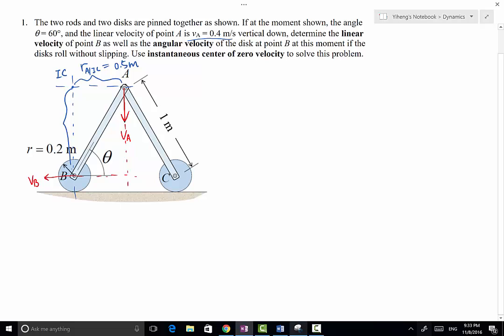And this distance right here is RB relative to IC, and that equals 1 times sine 60 degrees, and that is 0.866 meter.